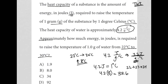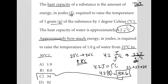The question says approximately how much, so I'm not necessarily looking for an exact answer. That makes me very confident the correct answer is choice C, 34 joules of energy. The key concept is that every 4.2 joules of energy gets you 1 degree Celsius temperature increase, so for 8 degrees Celsius we just multiply 4.2 by 8.